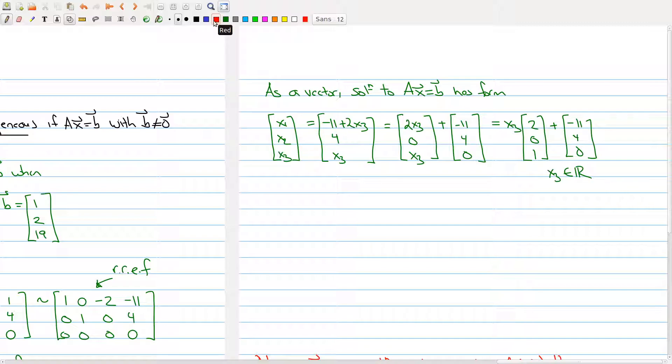Just as a little notation here, what we can do to make things a little tighter is let P be the vector -11, 4, 0, and let V be the vector 2, 0, 1.